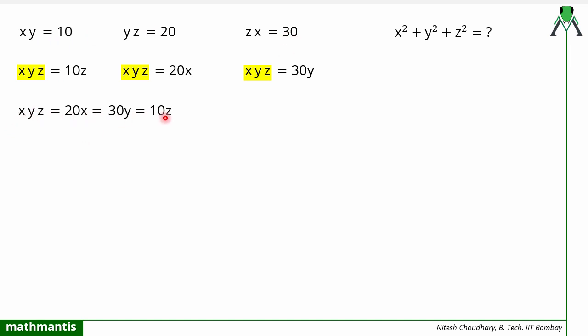Now by using this we will find the value of x² + y² + z². To simplify this, I will find the ratio of x, y, z by using this equality: 20x = 30y = 10z. To do this, I will find the LCM of 20, 30, and 10, and that is 60.